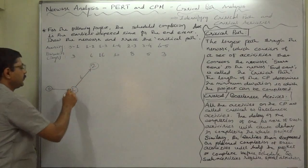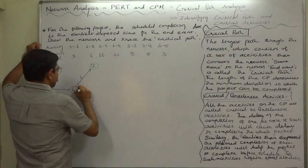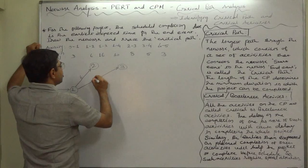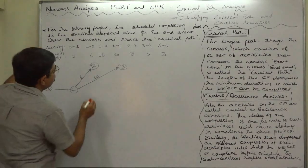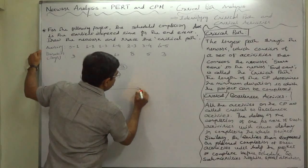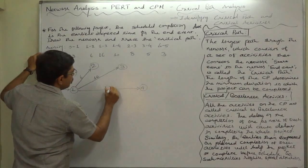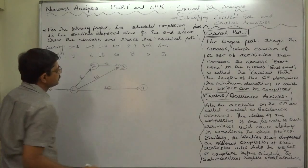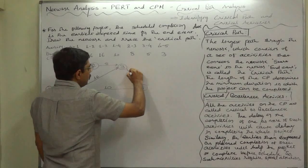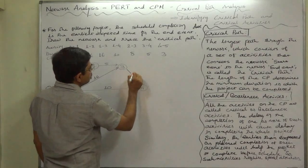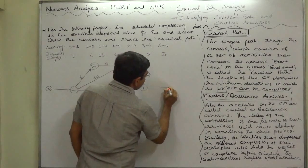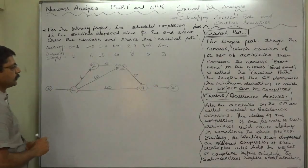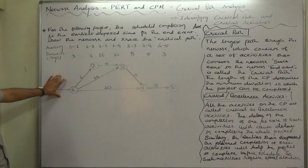Activity between node 1 and 2 will take 6 days. Activity between node 1 and 3 will take 16 days. Activity between node 1 and 4 will take 10 days. Activity between node 2 and 3 will take 8 days. Activity between node 3 and 4 is going to take 5 days. The last activity between node 4 and 5 will take 3 days. This is the PERT chart or network logic for this particular project.